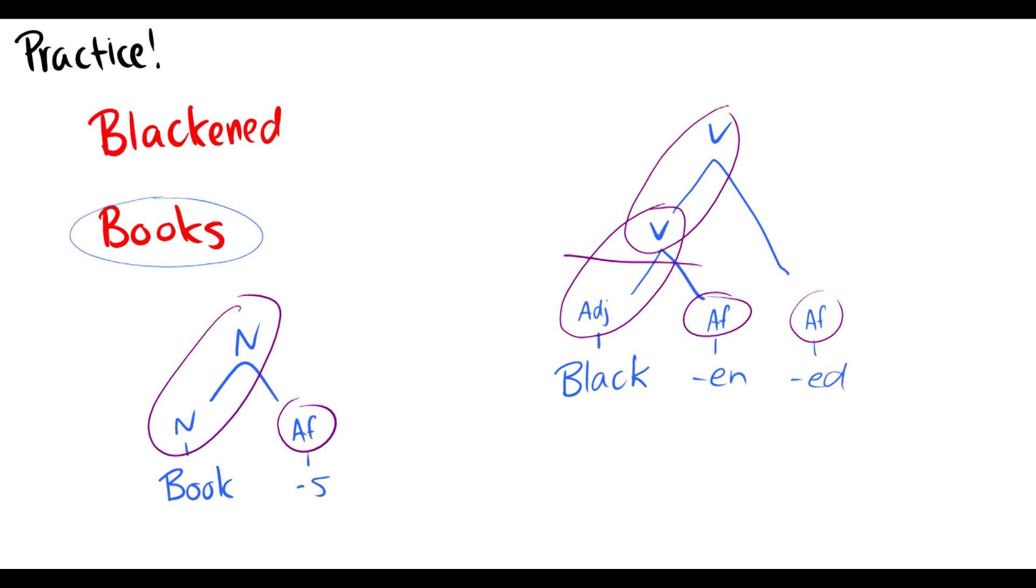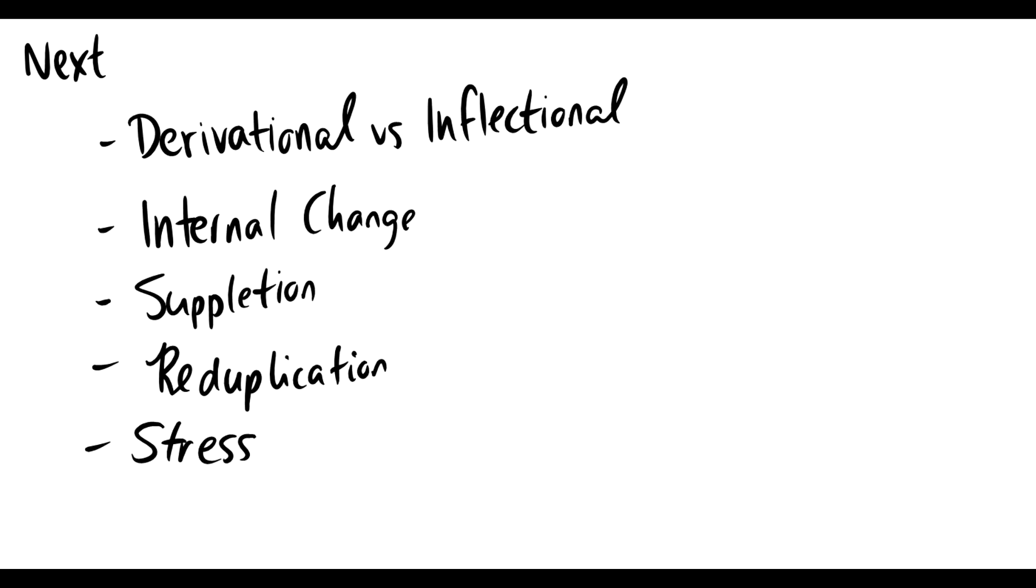Well next time we're going to talk about the difference between those two which is derivational versus inflectional morphemes. And then we're going to talk about how some morphemes work in other languages. And there are sometimes internal changes. Sometimes this thing called suppletion happens, reduplication, and there's also stress differences when we speak words. So next time we'll cover these. As always if you have any questions leave them in the comments below. And if you want to check out more videos go to trevtutor.com and there's more there. So have a great day and I'll see you guys next time.